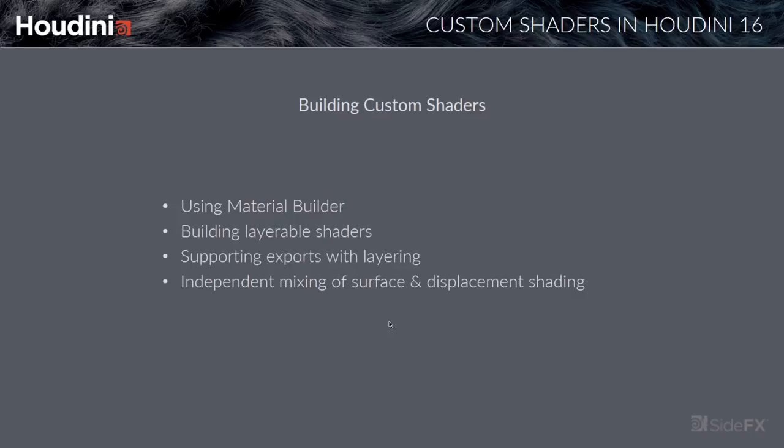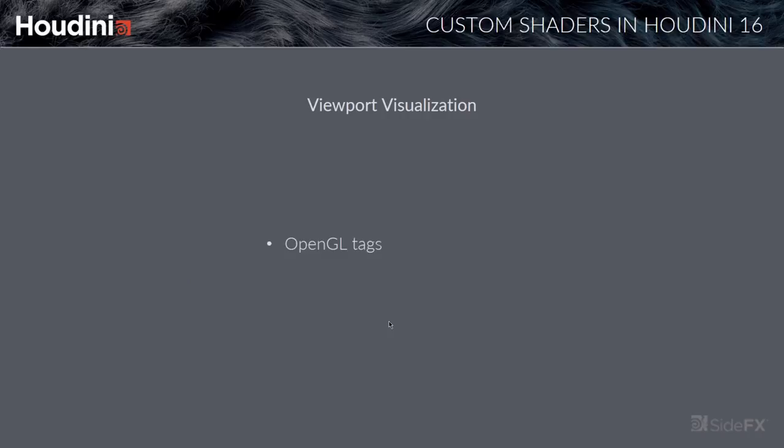Then we'll go a bit deeper and look at building your own custom shaders in this new context. For that we'll be using the Material Builder node. We'll look at how we can build shaders that are layerable, supporting your own custom exports with layering as well as independent mixing of surface and displacement shading. We'll also look at how you can use the new OpenGL tags to visualize your shaders in the viewport much more easily than before.